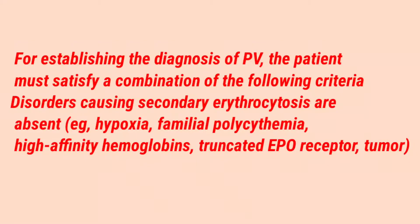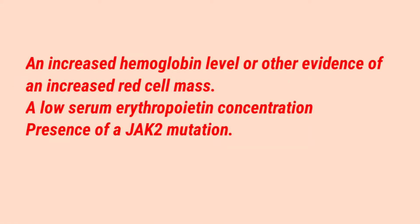Secondary erythrocytosis can be caused by hypoxia, familial polycythemia, high affinity hemoglobin, or a truncated erythropoietin receptor. For diagnosis of polycythemia vera, we look for increased hemoglobin and hematocrit levels, low serum erythropoietin levels, the presence of JAK2 mutations, and endogenous erythroid colony formation in vitro.